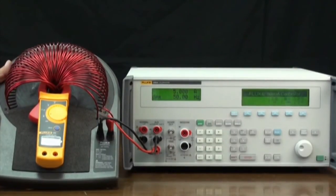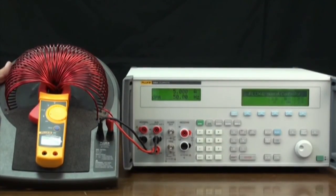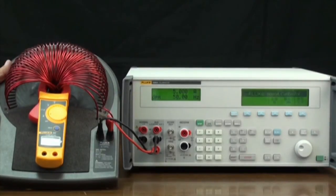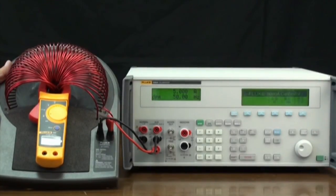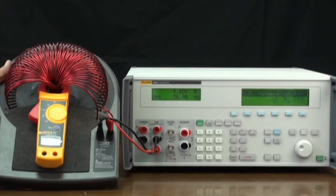The clamp meter's error is displayed on the control display. You can also choose not to adjust the 5080A's output and directly record the clamp meter's measurement results and calculate the error manually.